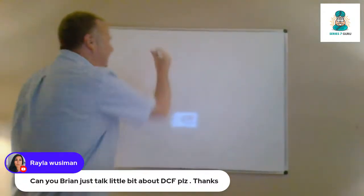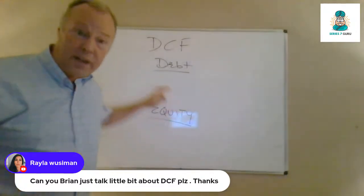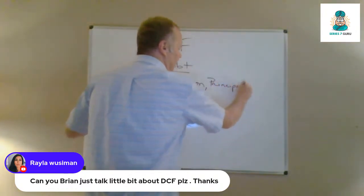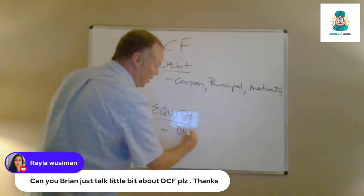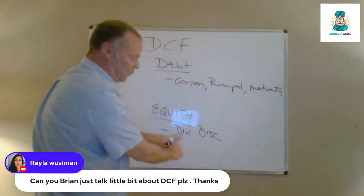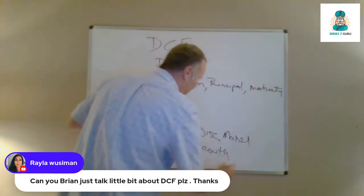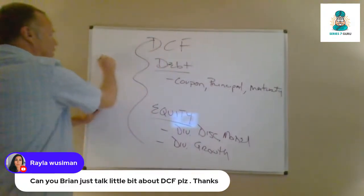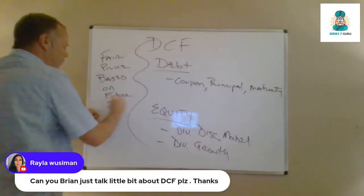Brian explains discounted cash flow (DCF): for bonds, the inputs are the nominal rate or coupon, the principal, and the maturity — that determines the number of income payments. For equities, the dividend discount model is used because dividends are the only income from stocks; for preferred stock it's fixed. There's also the dividend growth model. For the Series 65, these are fairly basic — the whole purpose is finding a fair price for a security based on future income streams.